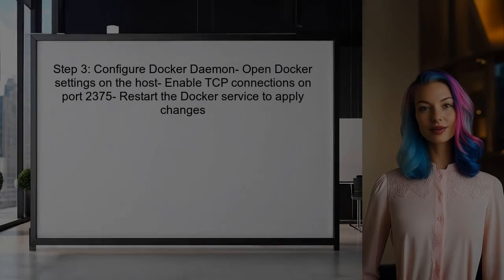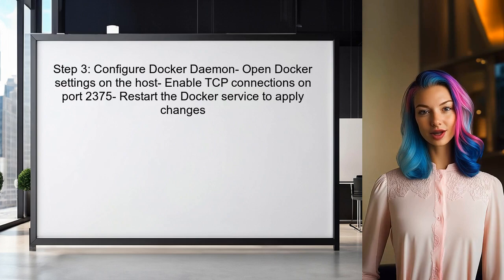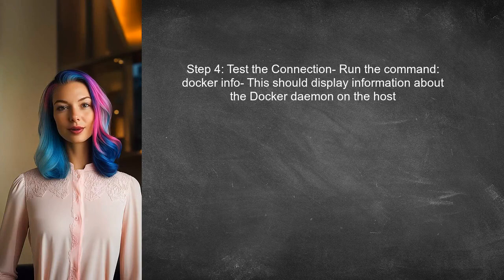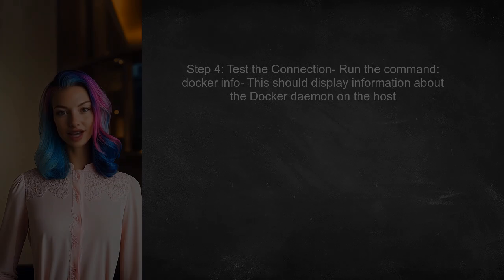After configuring the Docker host, the user should ensure that the Docker daemon on the host is set to listen for TCP connections. This can be done by modifying the Docker settings. Then, the user can test the connection from the virtual machine to the Docker daemon on the host by running a simple Docker command.